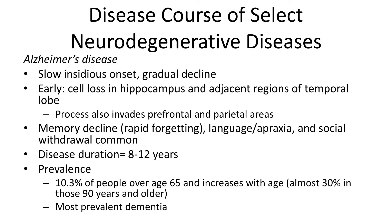The first neurodegenerative disease I'd like to focus on is the most common: Alzheimer's disease. It's marked by a slow, insidious onset and gradual decline — so insidious that many families are unaware of the problem until it affects functioning. Early on, it's marked by cell loss in the hippocampus and adjacent regions in the temporal lobe. The process can also invade prefrontal and parietal areas. Memory decline is marked by rapid forgetting, and language problems, apraxia, and social withdrawal are common. Disease duration ranges from 8 to 12 years. The prevalence is about 10.3% of people over age 65, increasing with age — almost 30% of those 90 and older are diagnosed with Alzheimer's disease. It is the most prevalent cause of dementia, accounting for about 60 to 80% of cases.